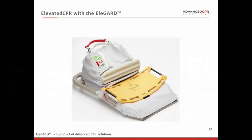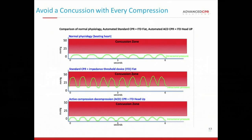Now we introduce elevated CPR with the EleGuard. This is a patient positioning device designed to be used with manual CPR, active compression decompression CPR, or the ITD. The Lucas back plate is already built into this device, and it is battery powered. You place the patient on it just as you're ready to start high-quality CPR, prime the pump for a couple of minutes, and then push a button to elevate the head to the optimal position. Using ACD-CPR with the ITD and the Lucas device, you can perform high-quality CPR with the head and thorax elevated and stay out of the concussion zone.